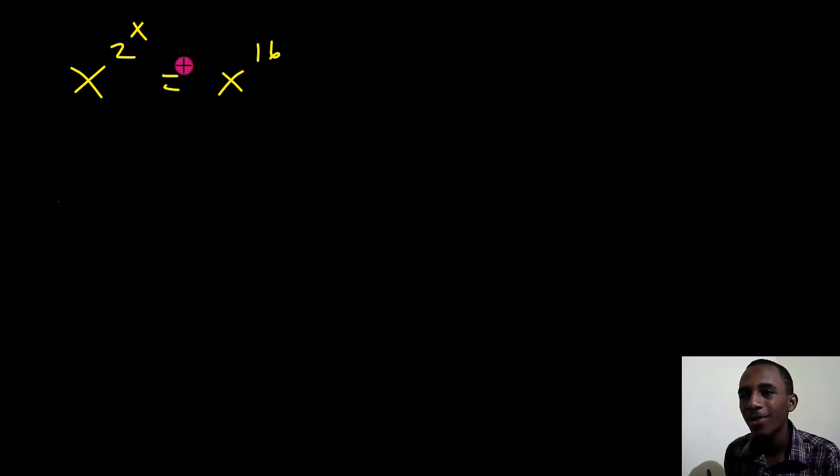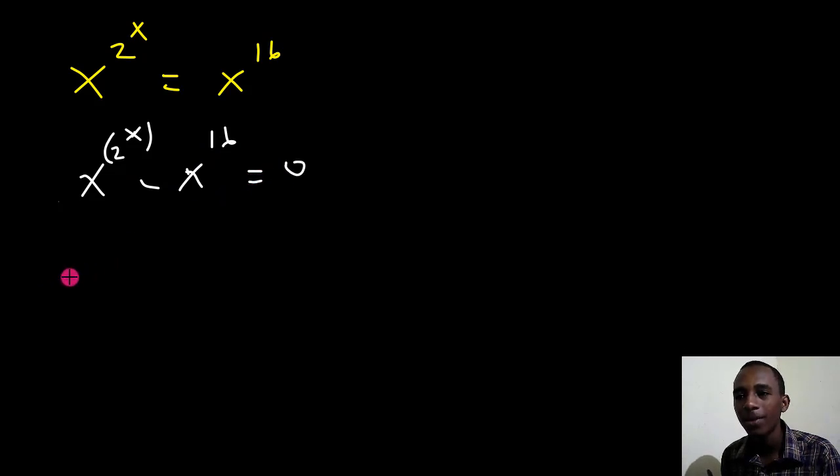So I'll bring the x to the 16th power this side, so I'll have x to the power 2 to the power x. And by the way, this means x to the power 2 to the power x, so the 2 to the power x is the power of x minus x to the power 16 equals 0.